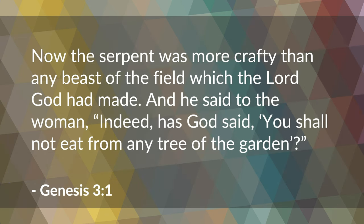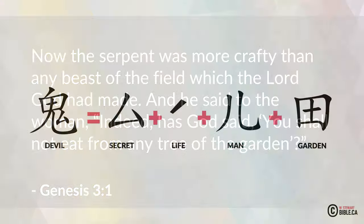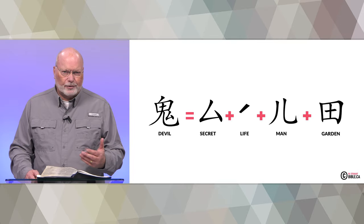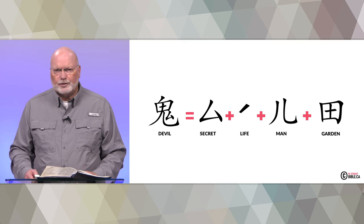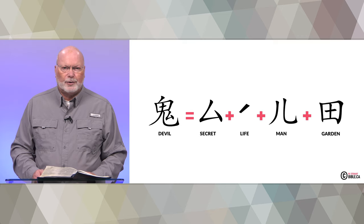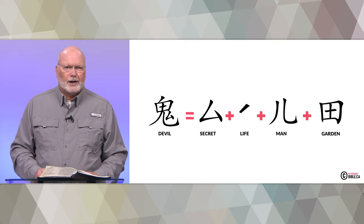Next is the character representing the devil. From Genesis 3:1: 'Now the serpent was more crafty than any beast of the field which the Lord God had made. And he said to the woman, Indeed, has God said, you shall not eat from any tree of the garden?' We know from further reading that this serpent was the devil. The character for 'devil' is made up of the Chinese characters for 'secret,' 'life,' and 'man in the garden.' The devil comes secretly to the woman in the garden and leads Eve astray, endangering her life — and man joins her in that.